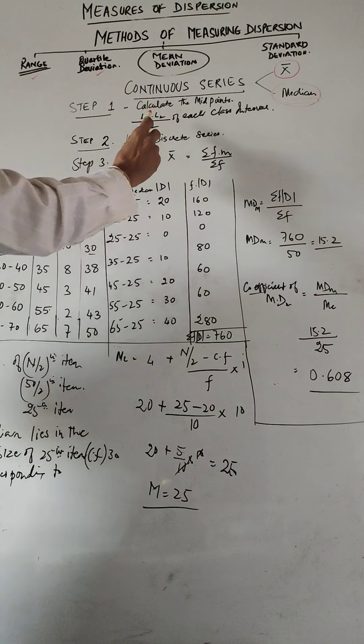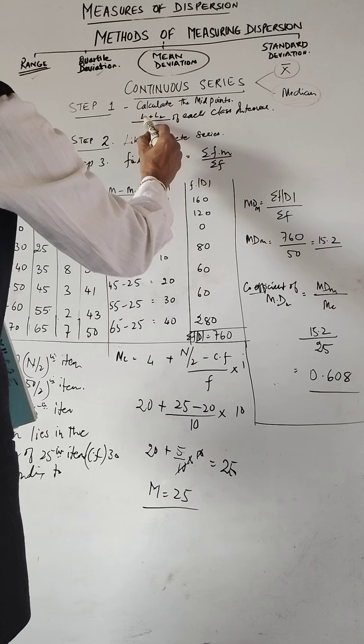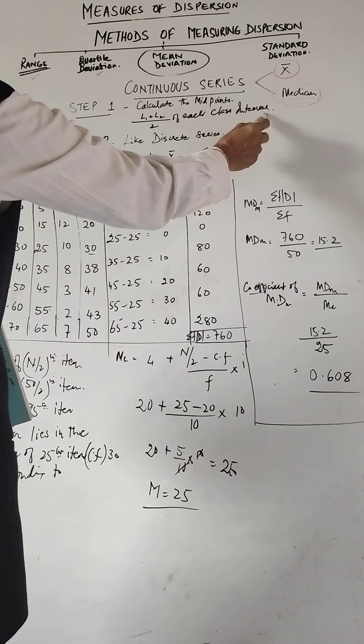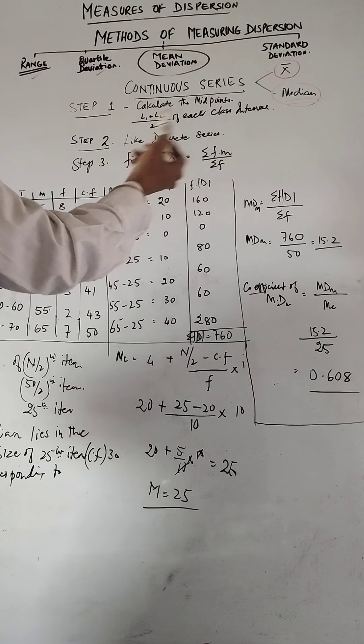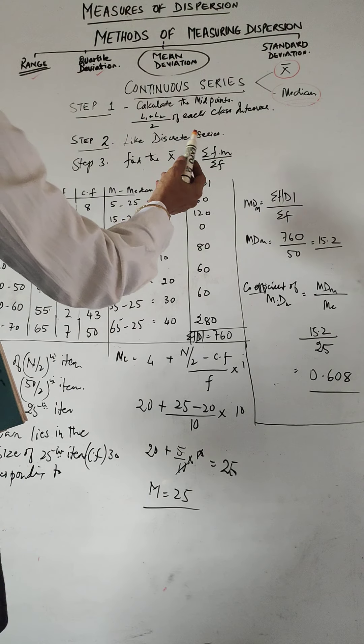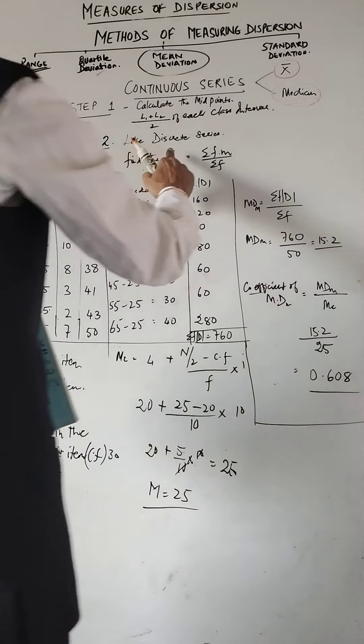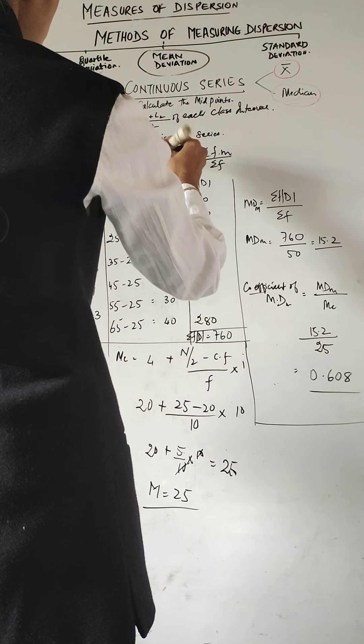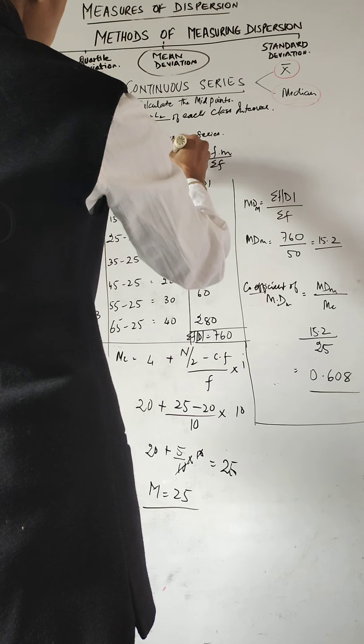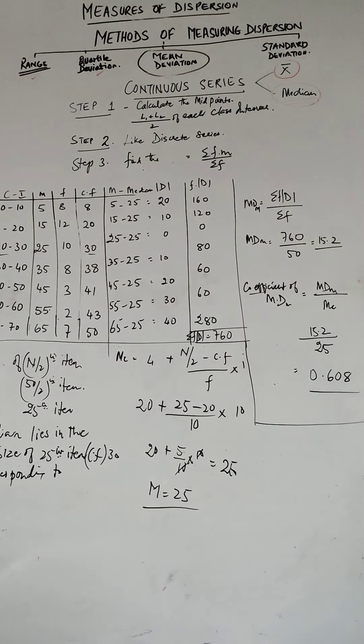Step one we calculate the midpoints as L1 plus L2 divided by 2 of each class interval. Then it becomes like a discrete series. And then you find out the median.